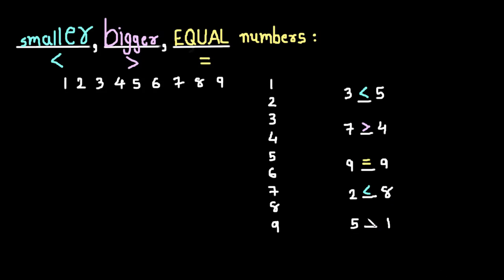Here we can see 5 is bigger than 1, so we will put this symbol for bigger so that the mouth of the symbol is open towards the bigger number. So 2 is smaller than 8, and 5 is bigger than 1. In this video we learned how to compare two numbers, taking examples of only one-digit numbers. In the next video we will continue the discussion with two-digit numbers. See you in the next video — goodbye and thank you.